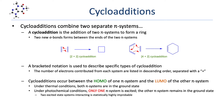Cycloadditions occur via the interaction of the HOMO from one pi system and the LUMO from the other pi system. Under thermal conditions, both pi systems are in the ground state. Under photochemical conditions, only one pi system will be in an excited state; the other will remain in the ground state. Molecules in an excited state are unstable and thus form in very low concentration. The frequency of interaction between two excited-state molecules is therefore extremely low. During a reaction, it's far more likely that a molecule in an excited state will encounter one of the many molecules that are in the ground state.